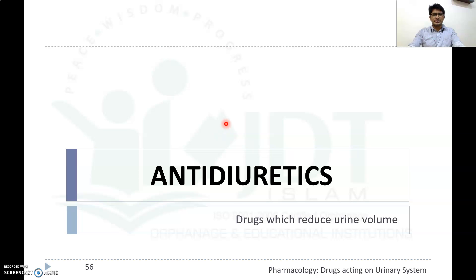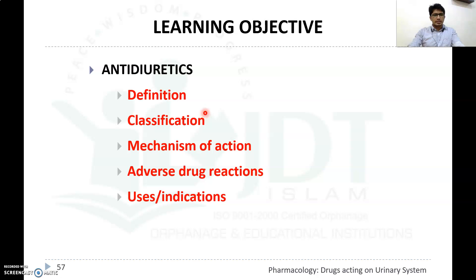In this video, we will discuss anti-diuretics. From the name itself, we can understand these are the opposite of diuretics — drugs which reduce urine volume. We will discuss the definition, classification, mechanism of action, adverse drug reactions, and uses or indications of anti-diuretic drugs.